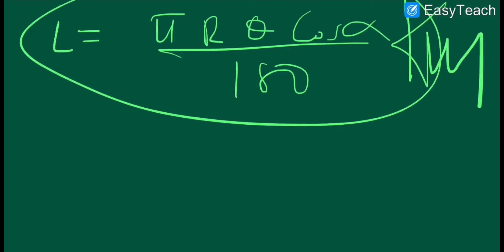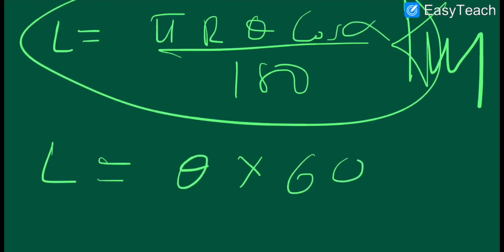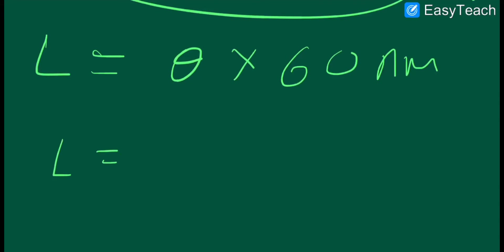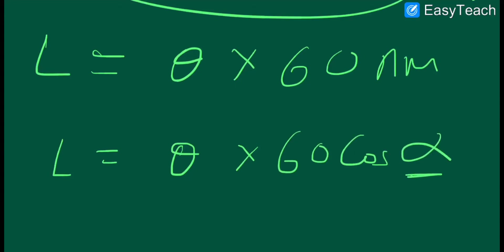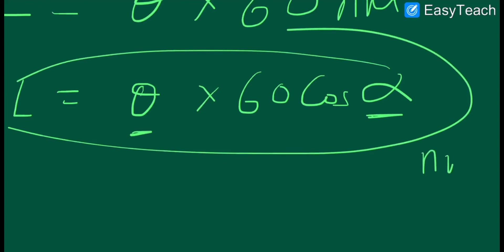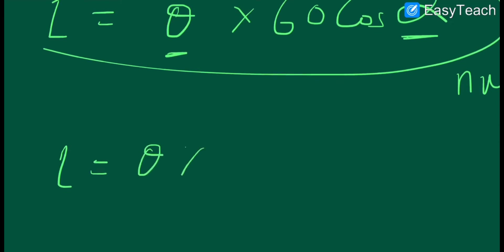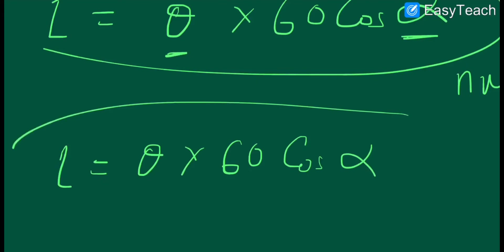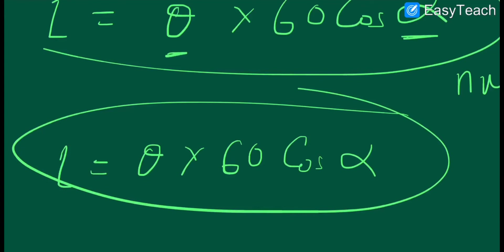How can we find the length along the small circle in terms of kilometers? We refer to the great circle formula for kilometers, which is theta times 60. For the small circle, we multiply by cos(alpha), so the length equals theta times 60 times cos(alpha), where alpha is the angle of latitude and theta is the subtended angle. This is the formula for finding the length along the small circle in terms of kilometers.